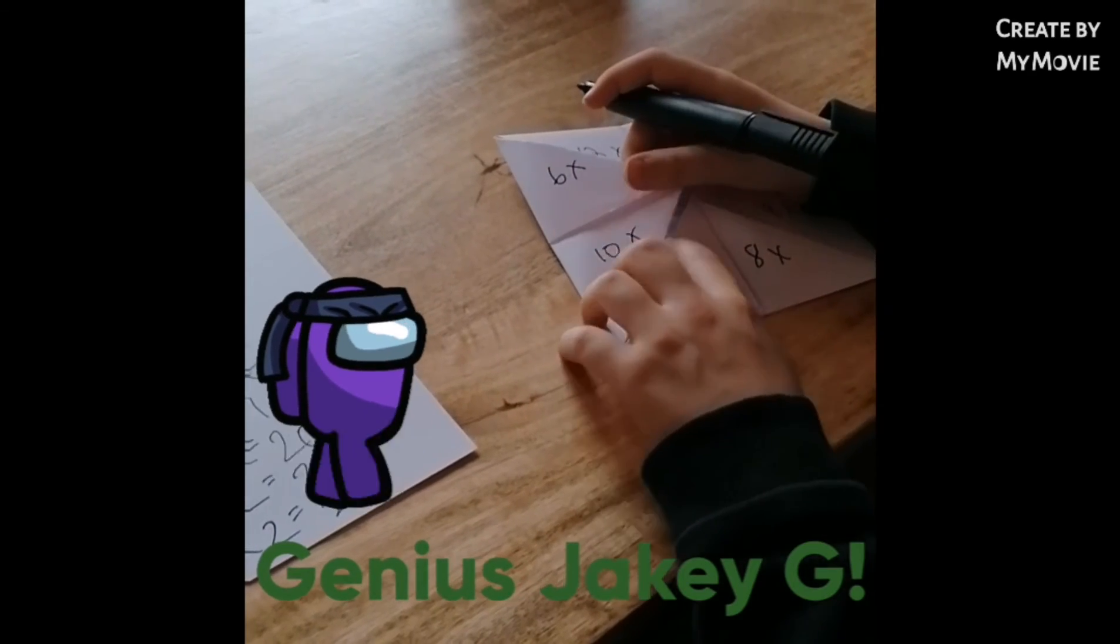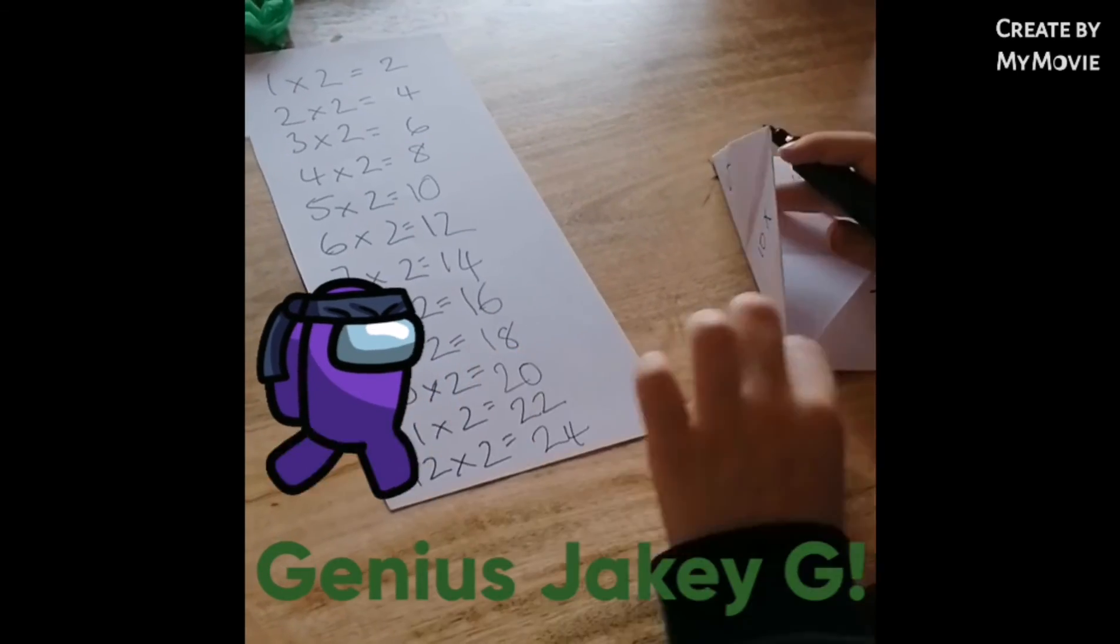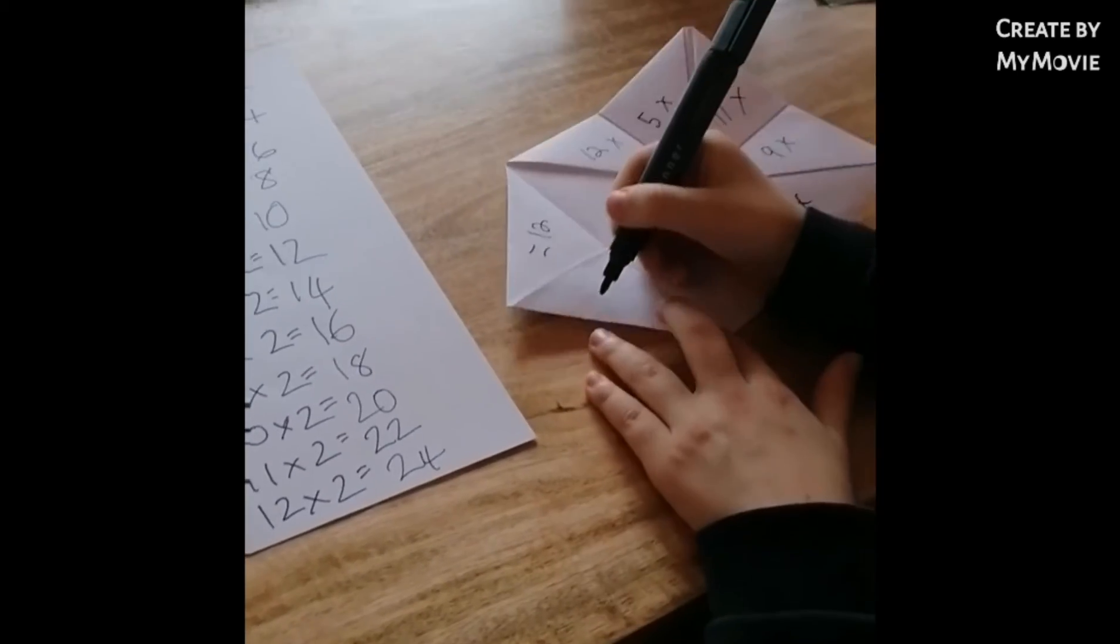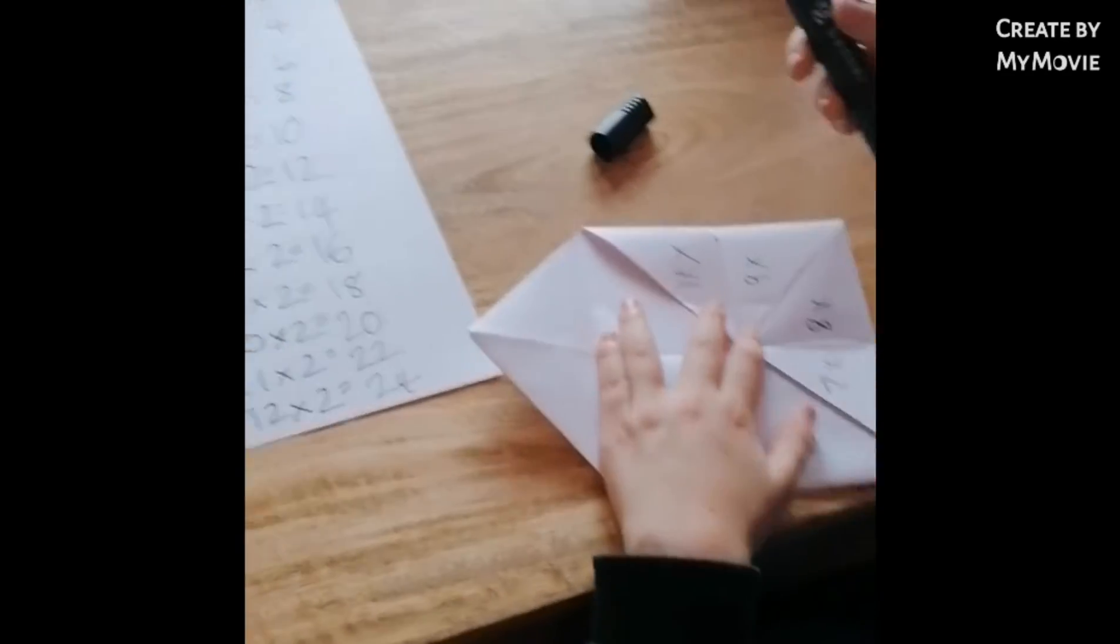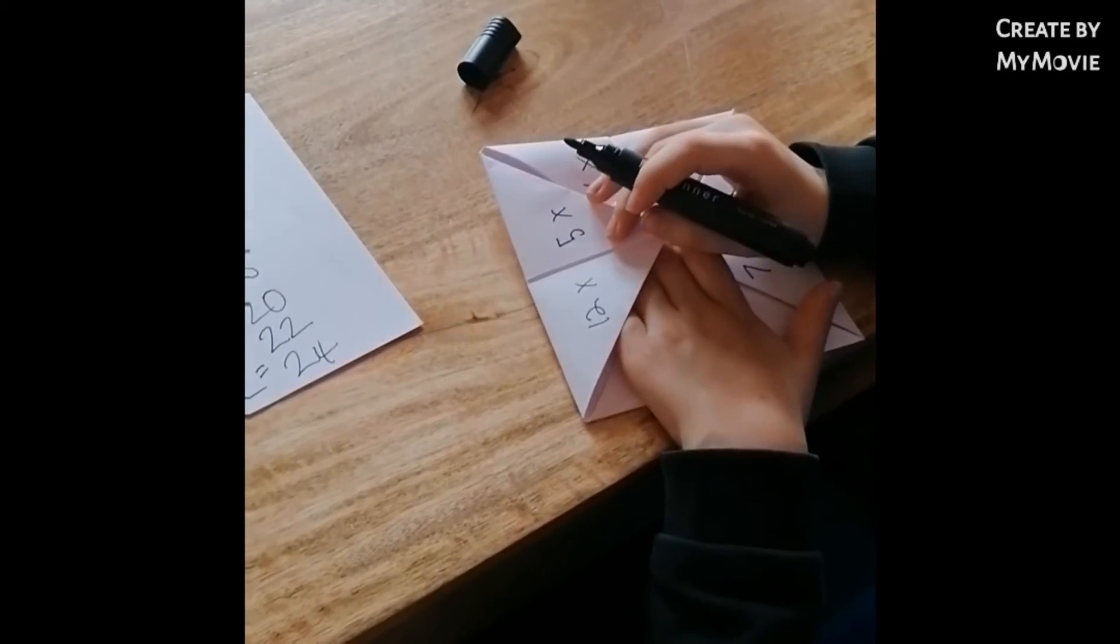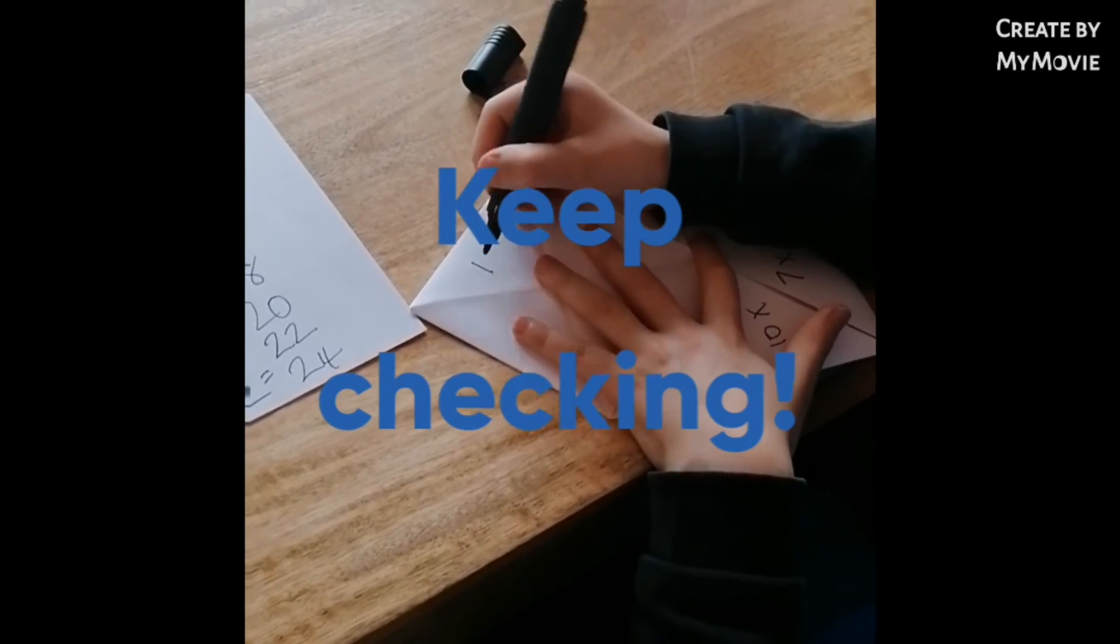Down here, it's ten times two. Twenty. Equals twenty. Five times two equals ten.